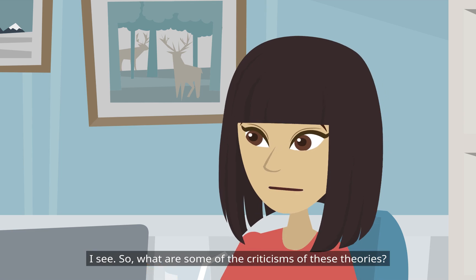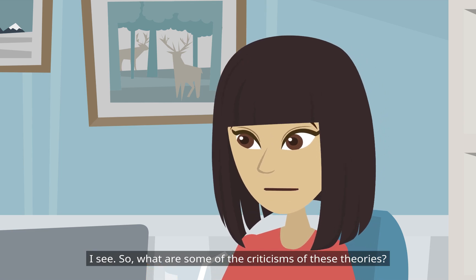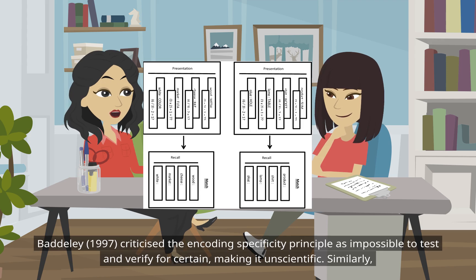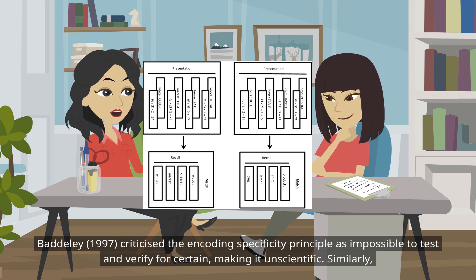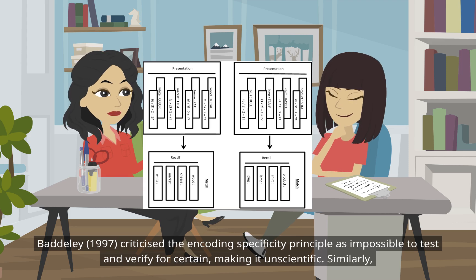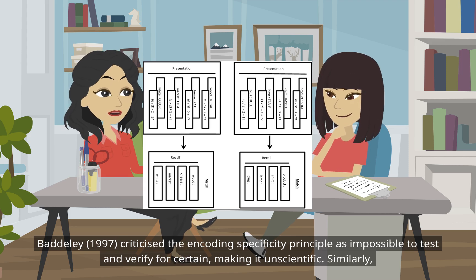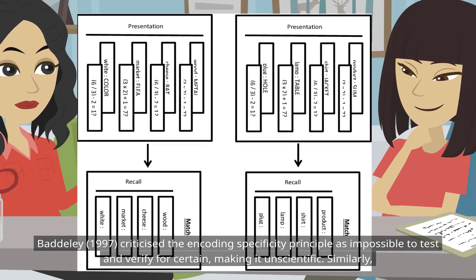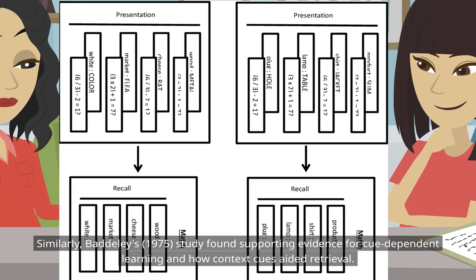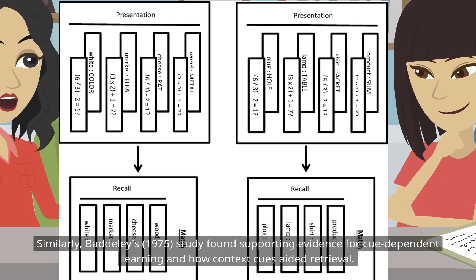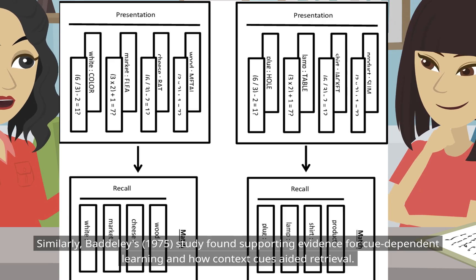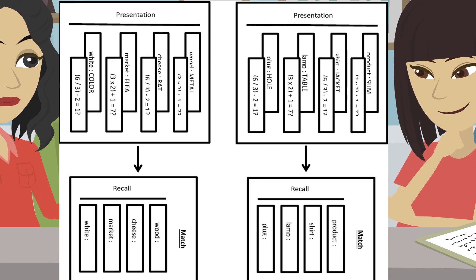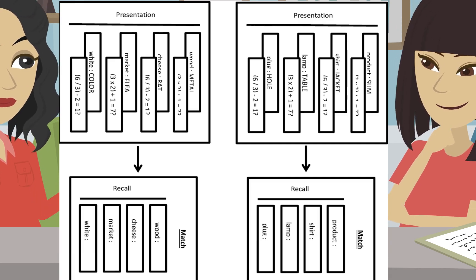What are some of the criticisms of these theories? Baddeley, 1997, criticised the encoding specificity principle as impossible to test and verify for certain, making it unscientific. Similarly, Baddeley's, 1975, study found supporting evidence for cue-dependent learning and how context cues aided retrieval.